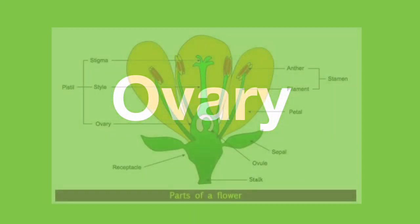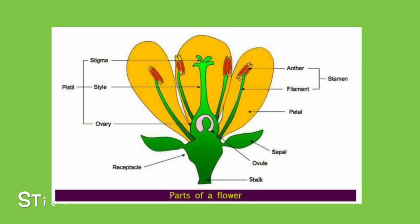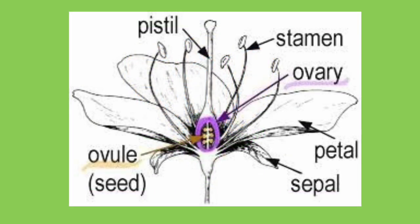Moving on to another female part of the flower — the ovary. You can see the stigma and style, and the style leads down to the ovary at the base of the flower. The ovary is highlighted here in purple, just at the base of the style.